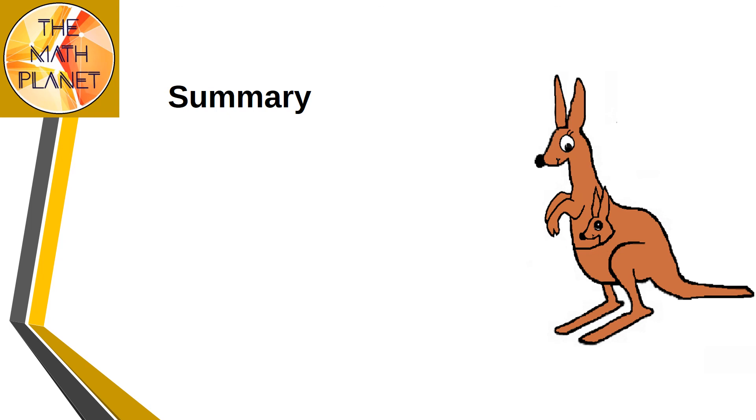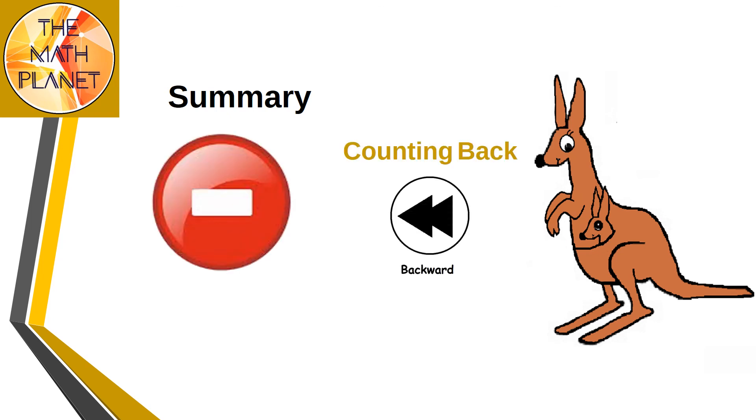We're done for today's lesson. Today we learned how to subtract within 100 by counting backwards on an open number line. To do so, we start at the whole, then we count back to subtract the tens, and then we count back to subtract the ones. And the destination point is the difference.